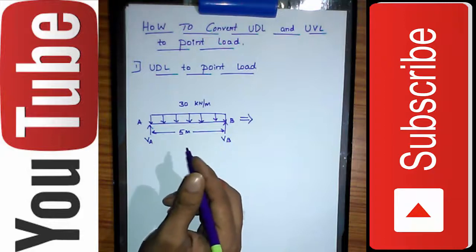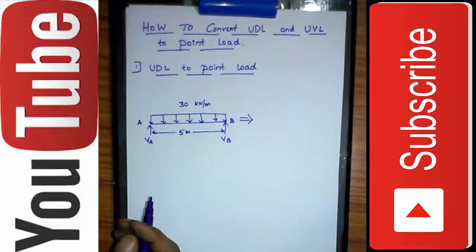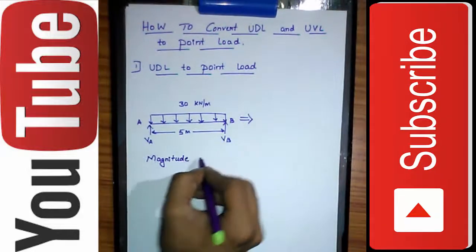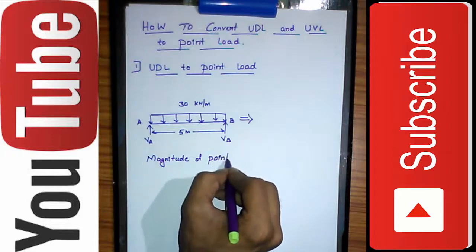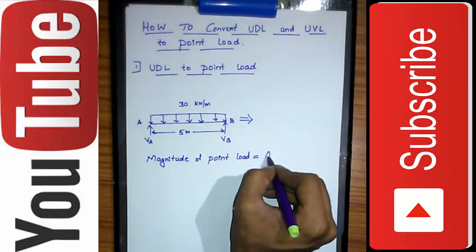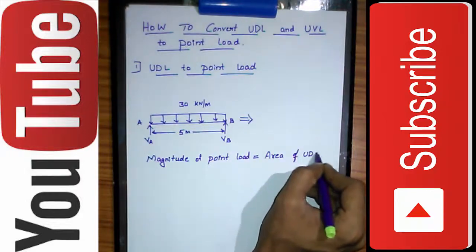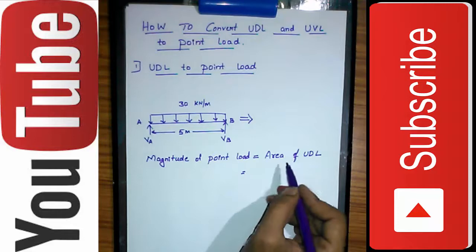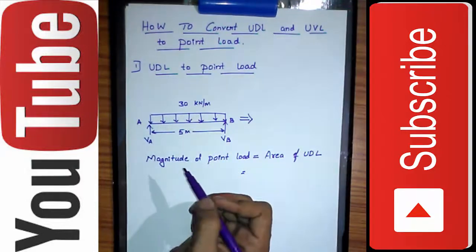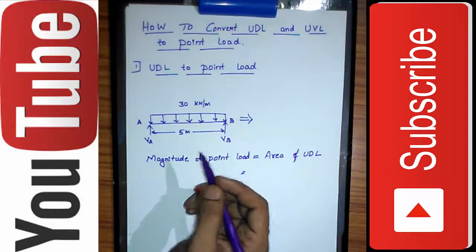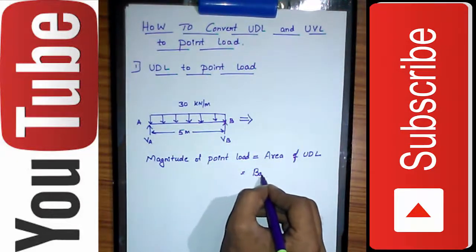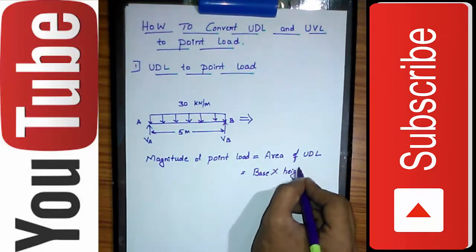To convert this UDL to a point load, we first need to calculate the magnitude of the point load. The magnitude of the point load is equal to the area of the UDL. Since UDL is in the form of a rectangle, the area is base multiplied by height.